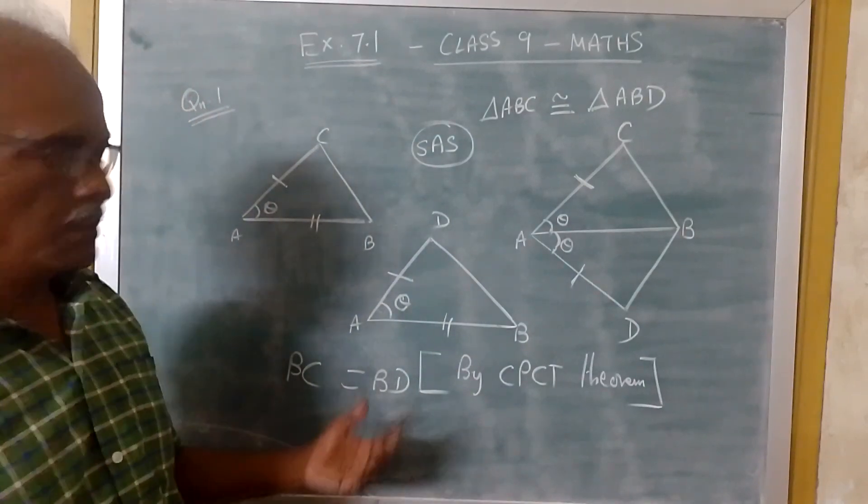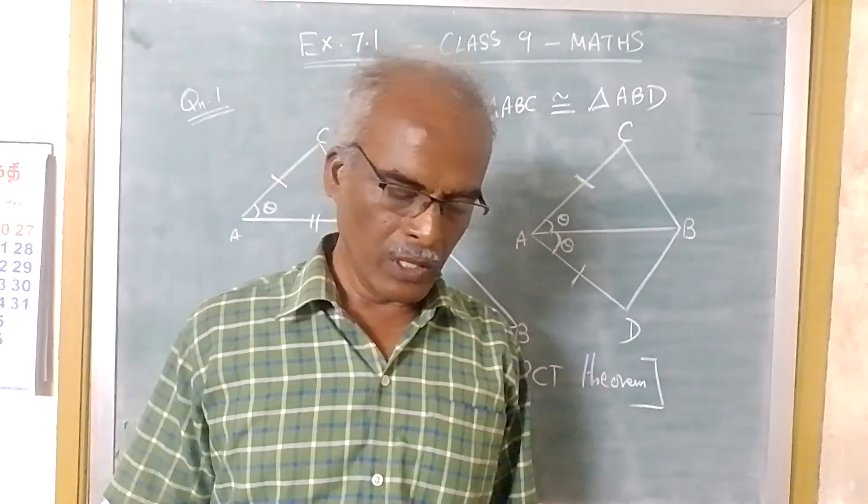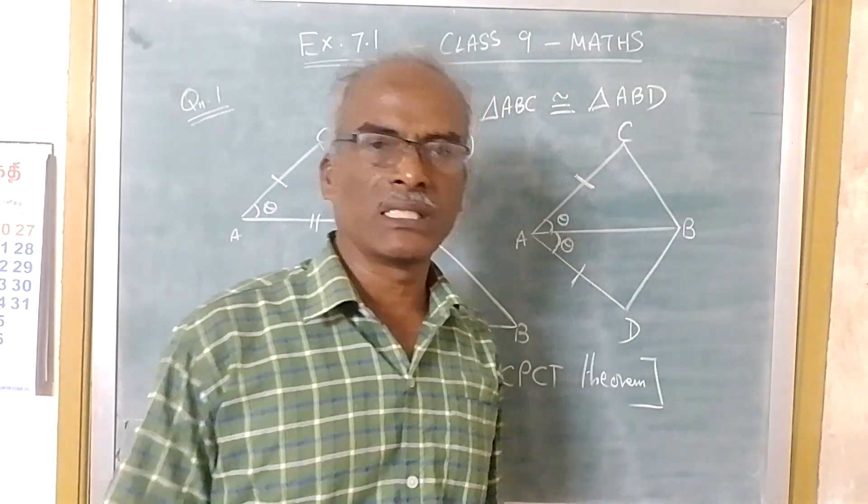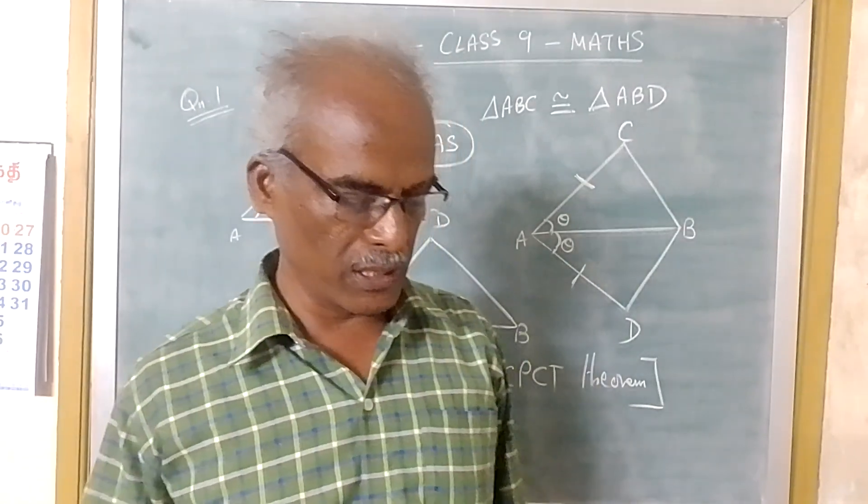BC is equal to BD by CPCT theorem. That is, corresponding parts of congruent triangles are congruent.